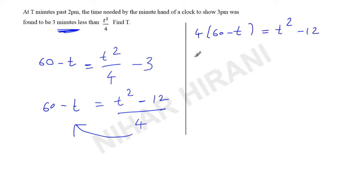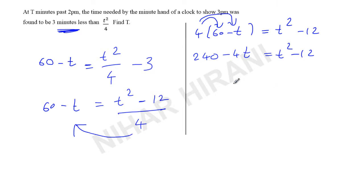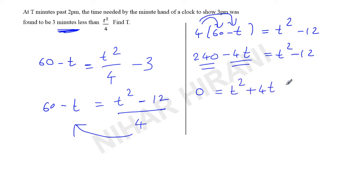Now this becomes 240. How do we proceed? Very simple — 240 goes to this side, so minus 240. And 4t goes to this side, so plus 4t. So I am writing here: 0 is equal to t squared, then plus 4t, then minus 252 — because 240 becomes minus, so minus 240 minus 12 equals minus 252.